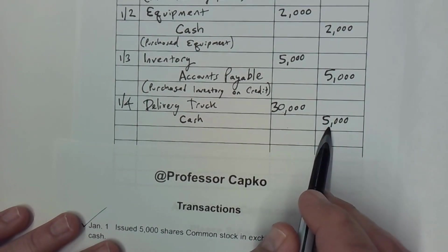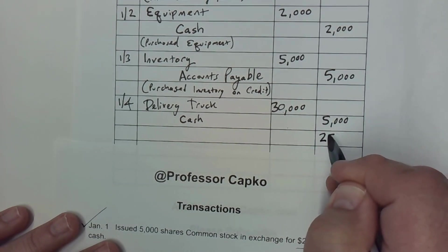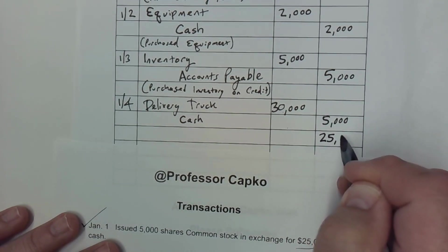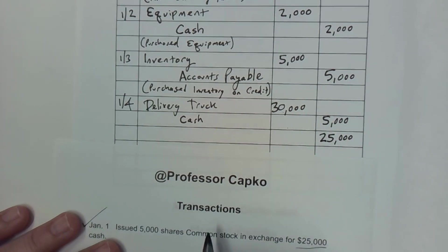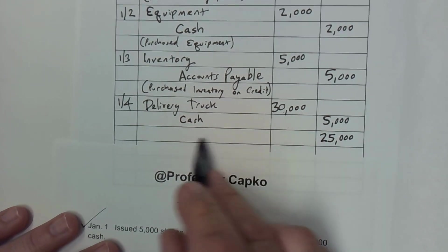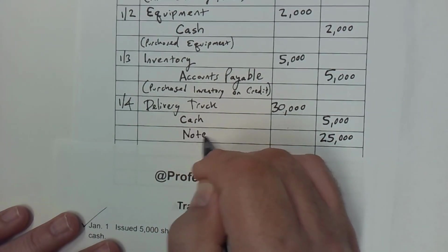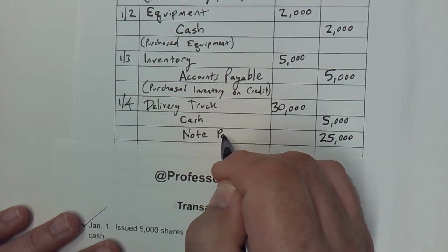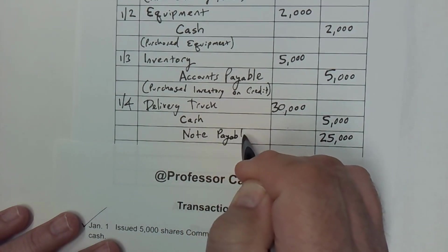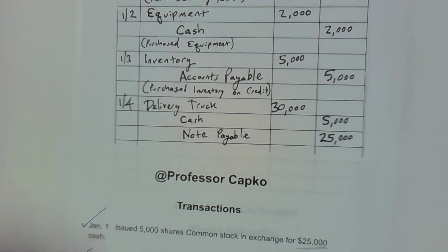We can see that our debits and credits don't balance. We've got $30,000 here and we've got $5,000 here. We have another $25,000 that we need to credit. And what is that going to be? That's going to be to our payable — in this case, it's going to be a note payable.